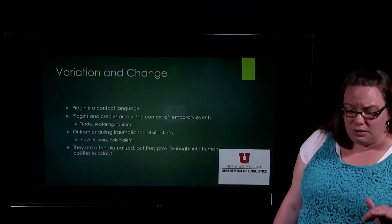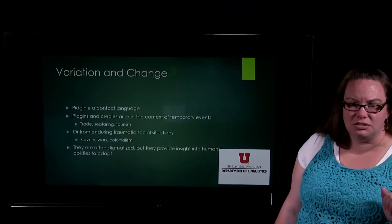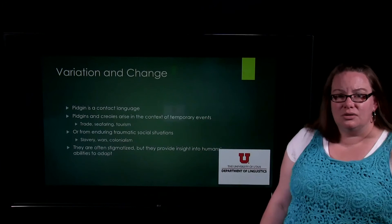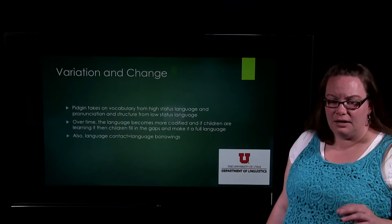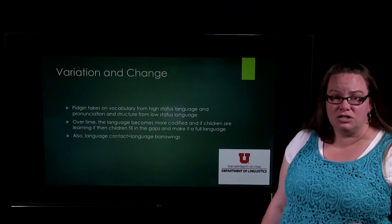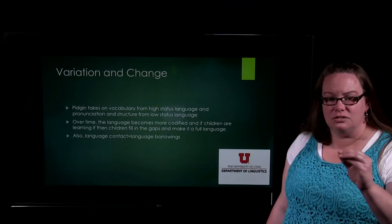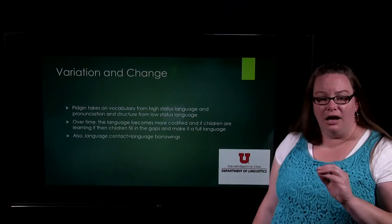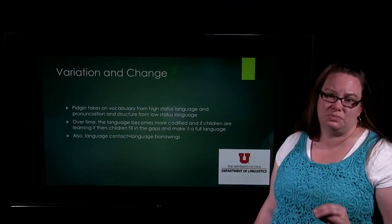A pidgin takes on the vocabulary from the high-status language — the language with power, money, and a military. The pronunciation and structure come from the lower-status language. So a pidgin develops that uses vocabulary from English, but some pronunciation features and other structural features from the Aboriginal languages present in Australia before English arrived. As they come into contact, other language borrowings happen as well.